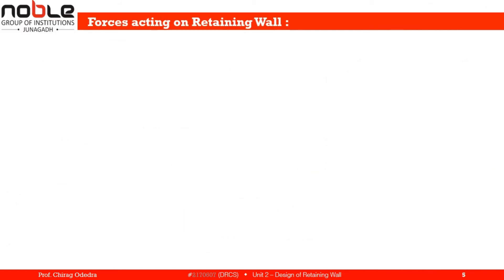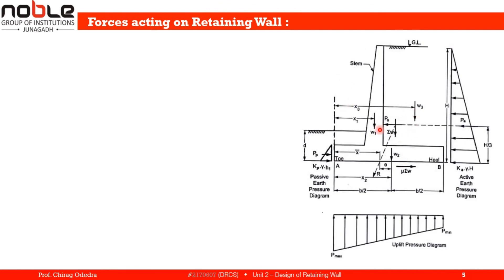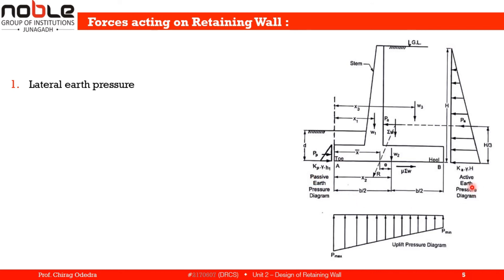Now let us start with the forces acting on a retaining wall. This figure shows all the forces acting on a typical retaining wall. The first force is lateral earth pressure — the force applied by the earth on the retaining wall. There are two types: active earth pressure, which pushes the retaining wall away from the backfill, and passive earth pressure, which pushes the retaining wall towards the backfill.